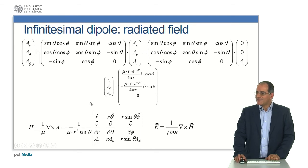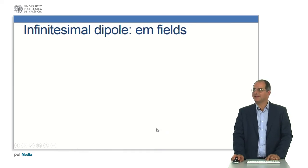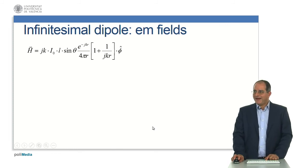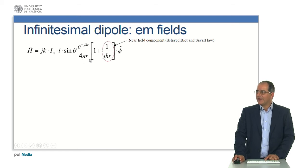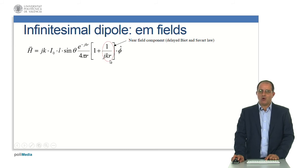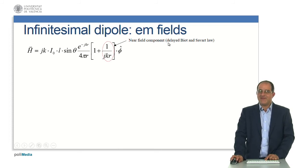We then take the curl of the vector potential to obtain the magnetic radiated field, and the curl of the magnetic field to obtain the electric radiated field. Particularizing for the infinitesimal dipole, the magnetic field produced by the current is given by this expression. You can identify terms proportional to the inverse square of r — these are near-field components, the delayed version of the Biot-Savart law.